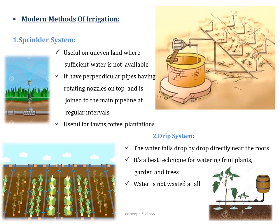Modern methods of irrigation include the sprinkler system and drip system. The sprinkler system is more useful on uneven land where there is insufficient water. It has perpendicular pipes with rotating nozzles joined to the main pipeline at regular intervals. When water pressure is produced by a pump, water escapes through the nozzles, providing an effect like rainfall. It is mainly used for lawns and coffee plantations. The drip system allows water to fall drop by drop directly near the roots. It is the best technique for watering fruit plants and water is not wasted at all.